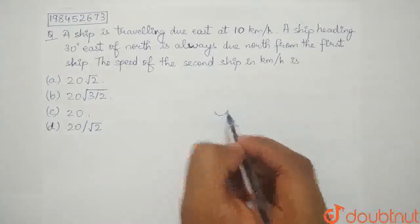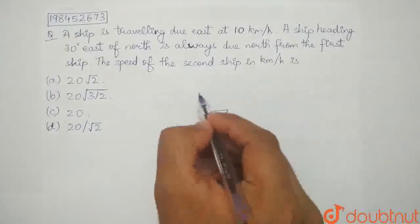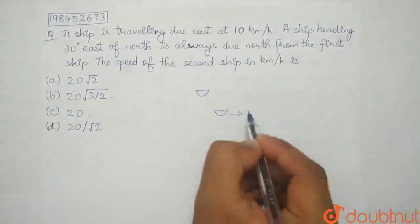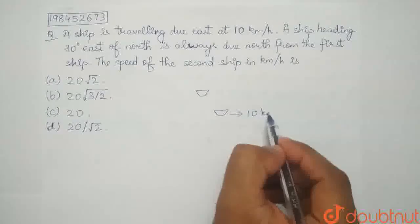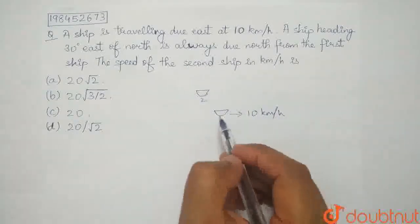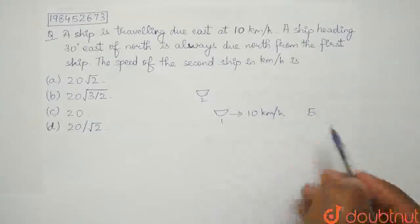Alright, let's say this is ship 1 and this is ship 2. This is the speed of 10 km per hour. So, this is the speed of 10 km per hour. This is east and north.